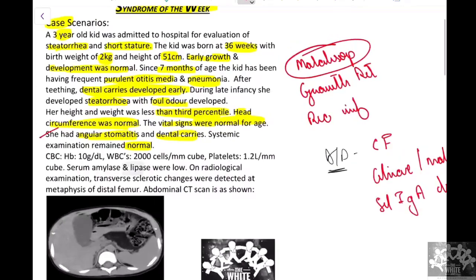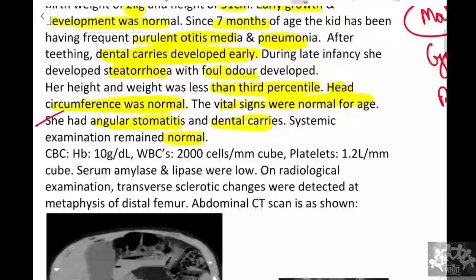Moving forward with investigations, CBC revealed low counts in all panels — hemoglobin was low, WBC was low, and platelets were also low, pointing towards a pancytopenia picture. Malabsorption was secondary to exocrine pancreatic deficiency with fat malabsorption, and serum amylase and lipase were also low.